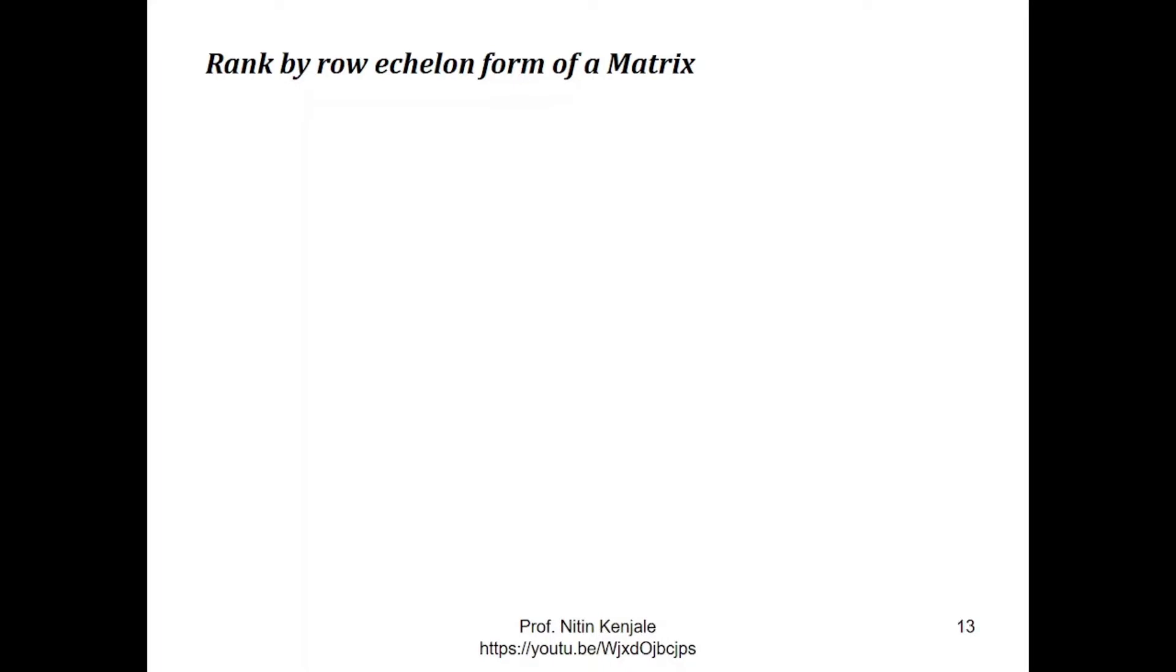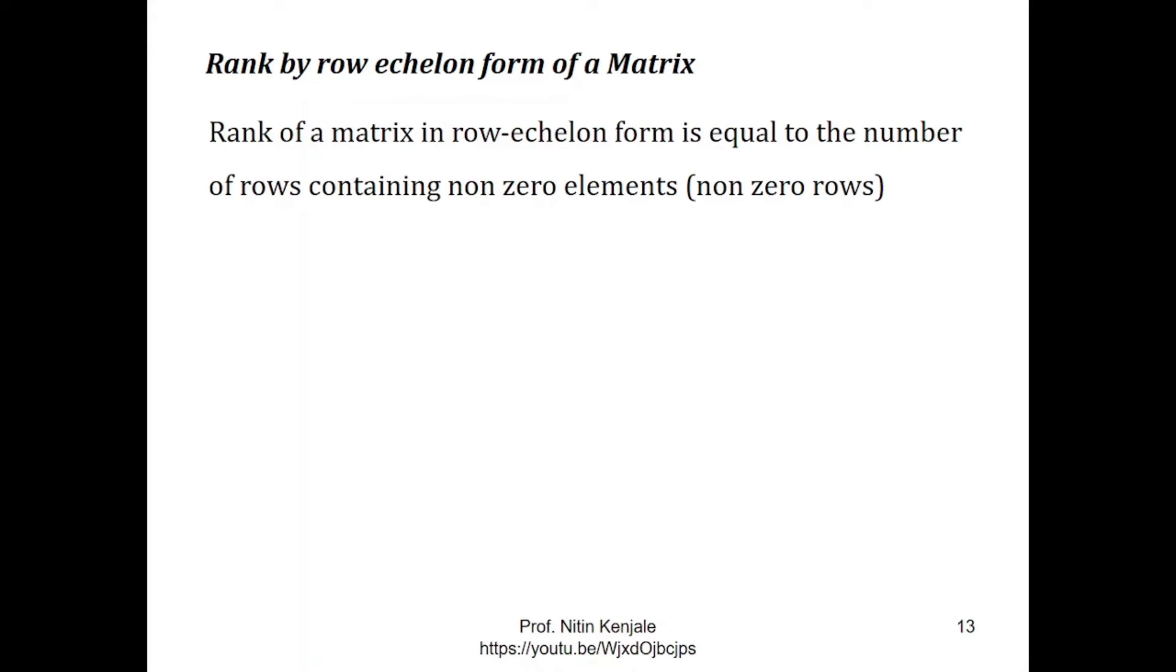So let us first understand how to find rank of the matrix using its row echelon form. Rank of a matrix in row echelon form is equal to the number of rows containing nonzero elements, or simply number of nonzero rows. So here rank means number of nonzero rows in its row echelon form.